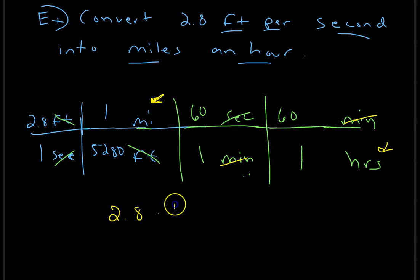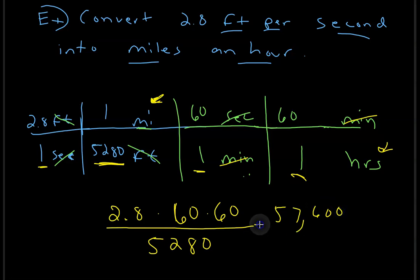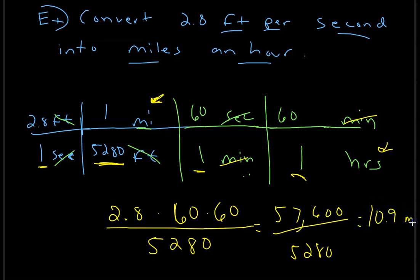Multiply it out: 2.8 times 60 times 60 divided by 5,280 equals approximately 10.9 miles per hour. That's how you convert a compound unit like feet per second into miles per hour. We'll do more of these in class — good luck!